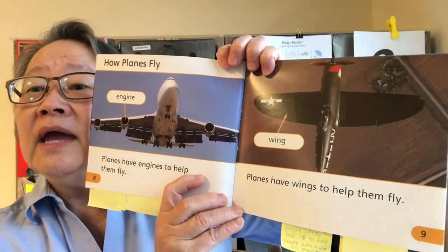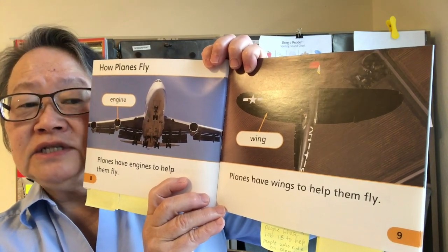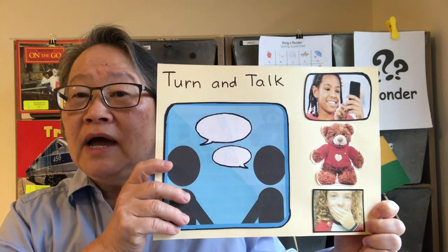Someone would also like to know how planes fly, so let's read that page. How Planes Fly — planes have engines to help them fly. Planes have wings to help them fly. Have you ever heard a plane engine? What did it sound like? Go ahead and turn and talk to a partner now.